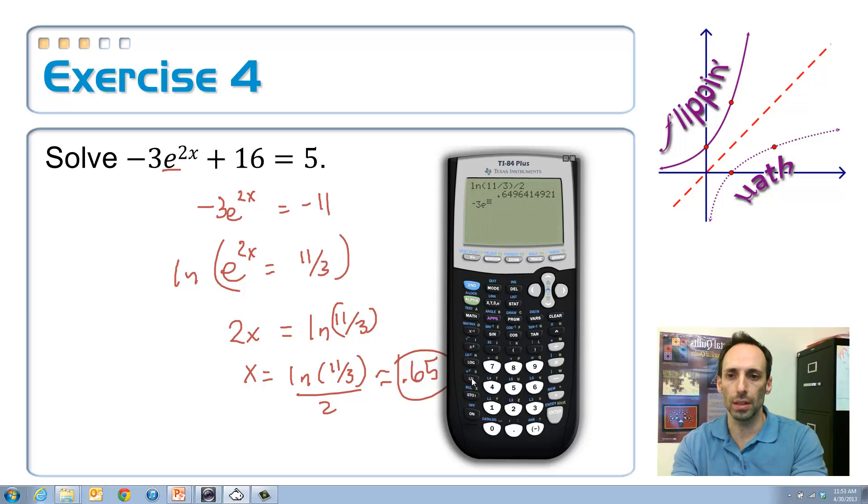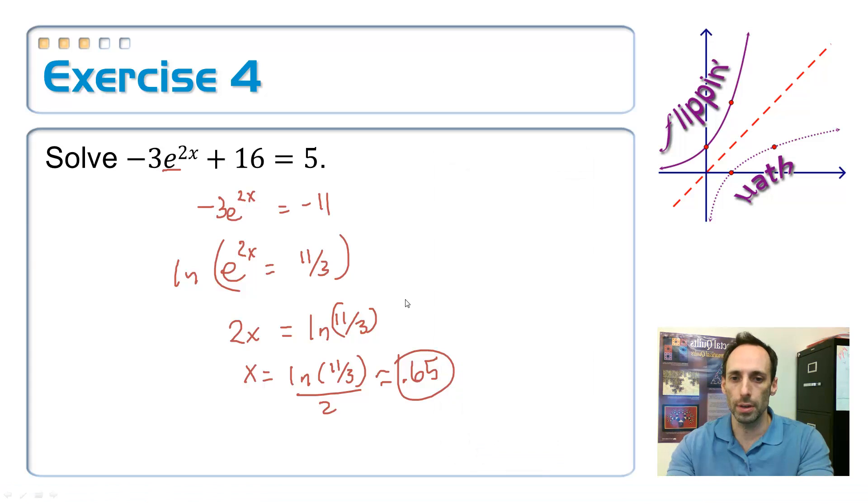and I'm going to hit second answer, so I don't have to call that back in again. Get out of the exponent there, get out of, there we go. And then plus 16, plus 16. And then enter, look at that, I've got 5. So, I know that I checked out and I did my problem correctly.